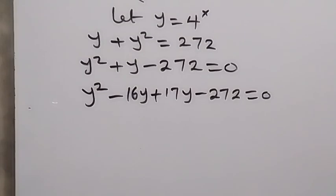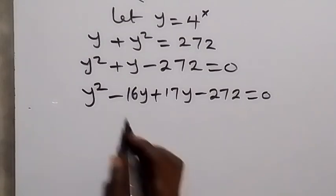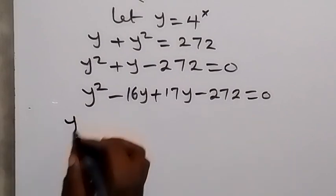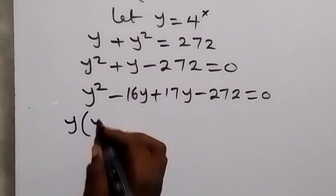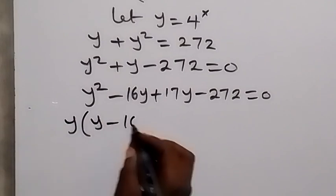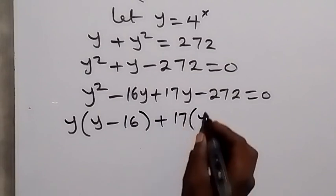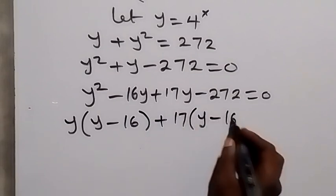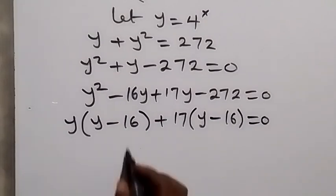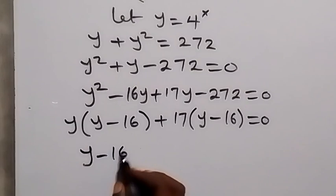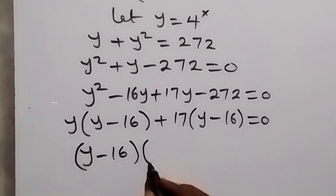Then from here we group this one together in two, and we bring what is common. y is common here, we have y into bracket y minus 16, and plus 17 is common here, we have y minus 16, which equals zero. Then y minus 16 is common, we have y minus 16 multiplied by y plus 17 which equals zero.